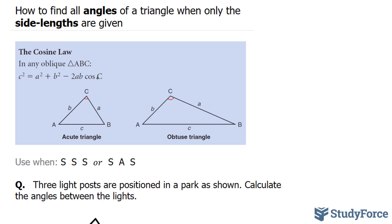You use the cosine law when you have a situation like this, where you have side, side, side and no angles, or when you have side, angle, side. But specifically in this video, we'll focus on an example where you have all three sides and no angles.